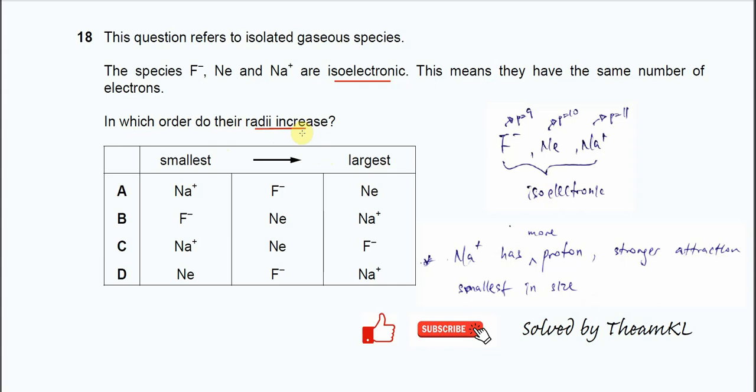We need to know the proton number of these three species. Fluoride has 9 protons, neon has 10 protons, and sodium ion has 11 protons. Sodium ion has the highest number of protons and the nuclear attraction is much stronger than the other two. Therefore, the size for the sodium ion is smallest, just because of the proton number, since they have the same electron number.